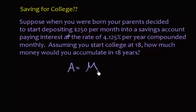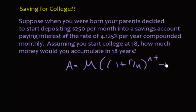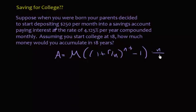A equals M, your monthly payment, times the interest rate r over n, where n stands for the number of times you compound in a year, which is 12 because it's monthly.